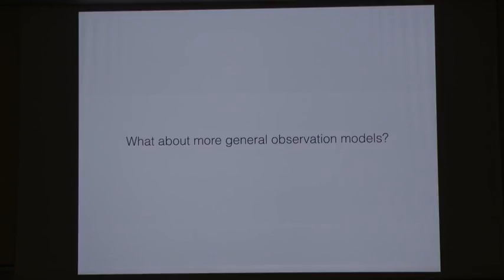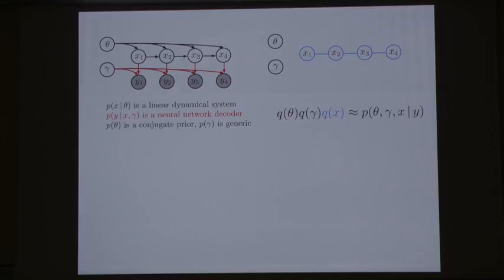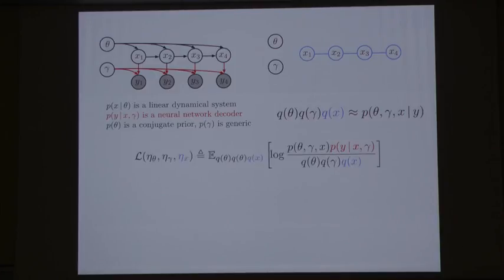We might need a more general observation model — maybe a neural network observation model. Here I've rewritten the same model, except now instead of nice linear Gaussian observations of our state, we're getting neural network observations. Think of each Y as a frame in a movie, with neural network decoder models to produce images. What breaks down? We can do the same structured variational family over latent variables, but we no longer have the result that optimal latent factors have particular parametric forms.